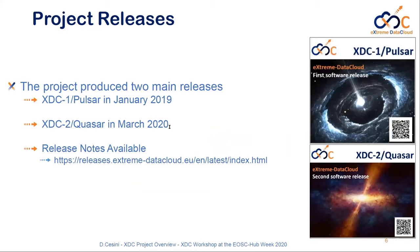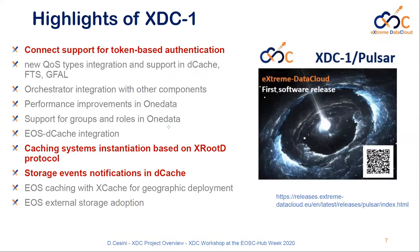The main achievements of the project are contained in two project releases. The first one, XDC1, codenamed Pulsar, was released last year. XDC2, also codenamed Pulsar, was released in March. A lot of technical highlights for both releases are present — you can check the release notes on your own. Ten components were released for each release. We used our internal repositories but all developments will be pushed back to the upstream repositories, so if you are already using XDC-developed services, you will get our developments as soon as they reach the upstream repositories.